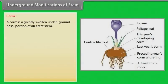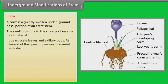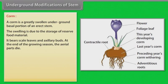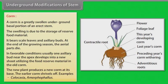A corm is a greatly swollen underground basal portion of an erect stem. The swelling is due to the storage of reserve food material. It bears scale leaves and axillary buds. At the end of the growing season, the aerial parts die. In favorable conditions, usually one axillary bud near the apex develops into a new shoot, utilizing the food reserve in the old corm. The new plant produces a new corm at its base; the earlier corm shrivels off.